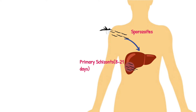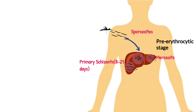Inside the liver, they reproduce asexually to form merozoites, and they are then burst into the bloodstream. In the bloodstream, this phase is known as the erythrocytic stage. During this stage, the subject remains symptom-free. Now, in the bloodstream, they invade into the RBCs and begin the erythrocytic cycle.